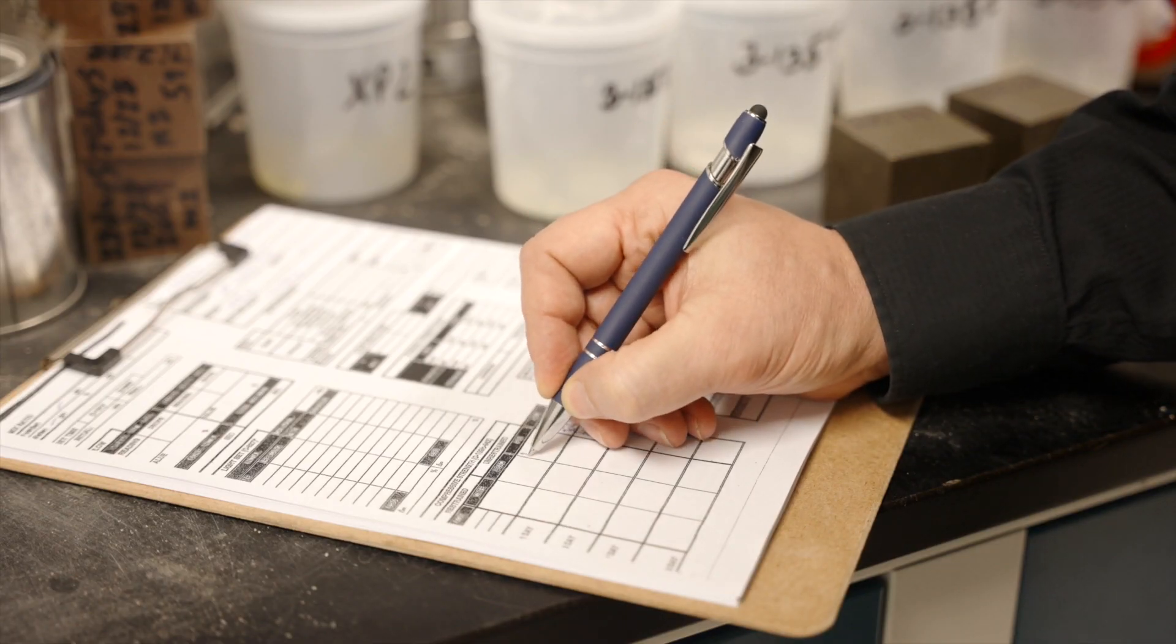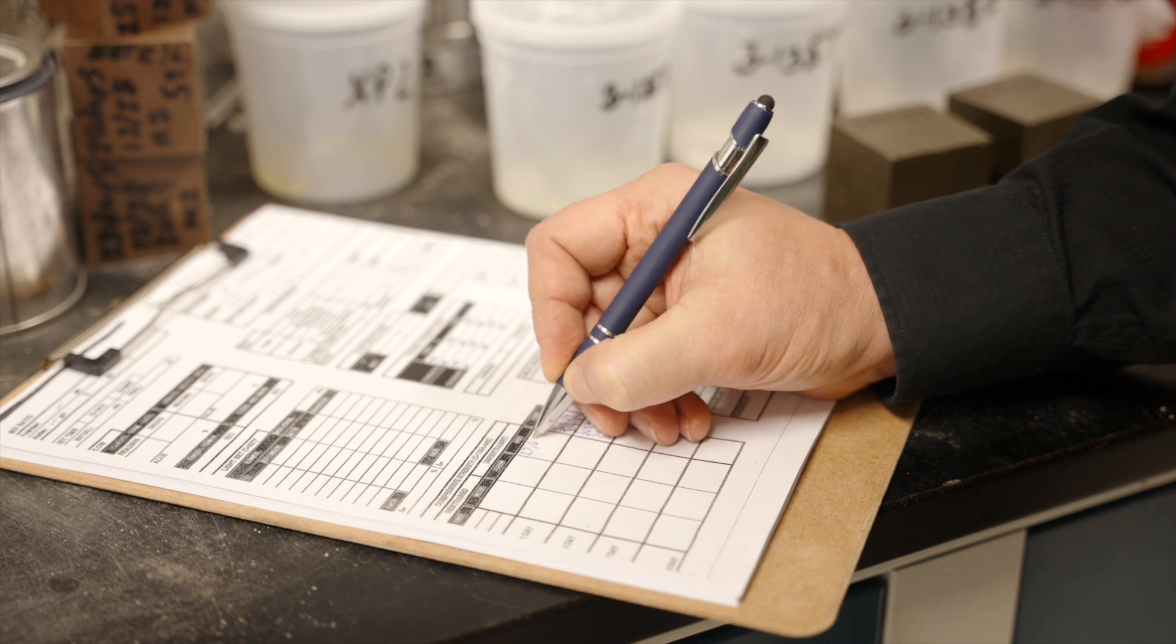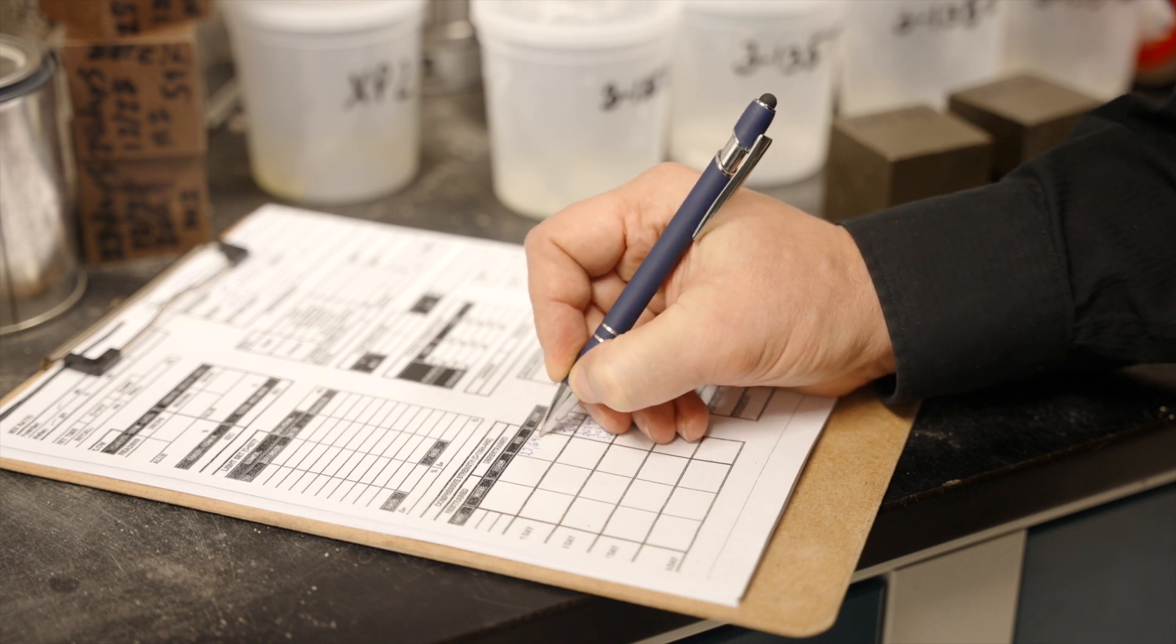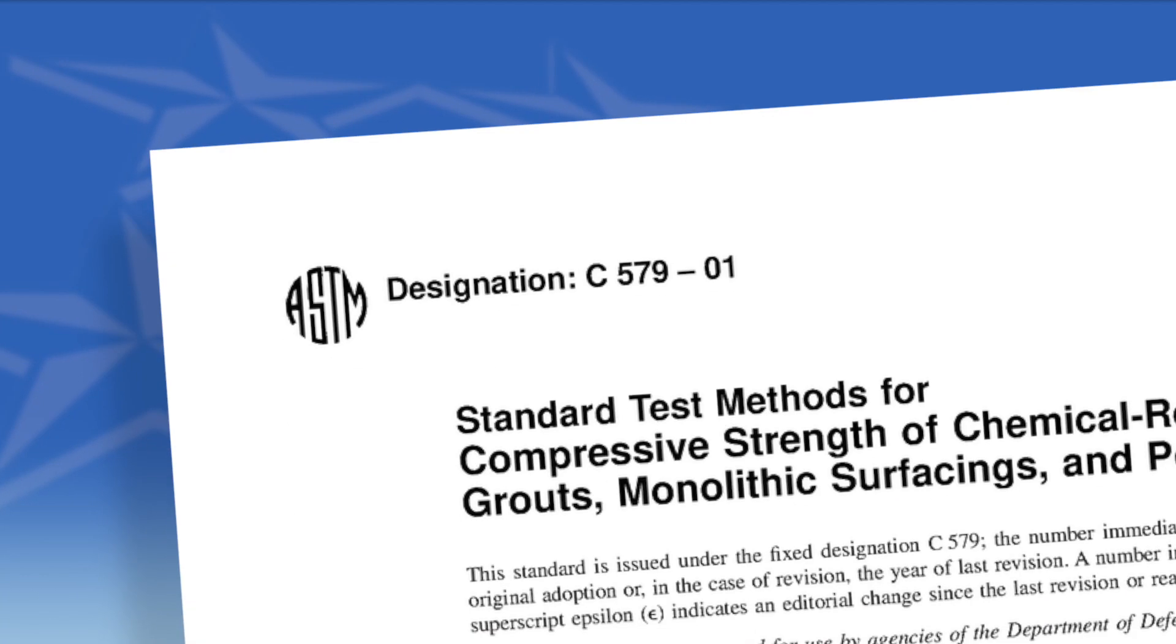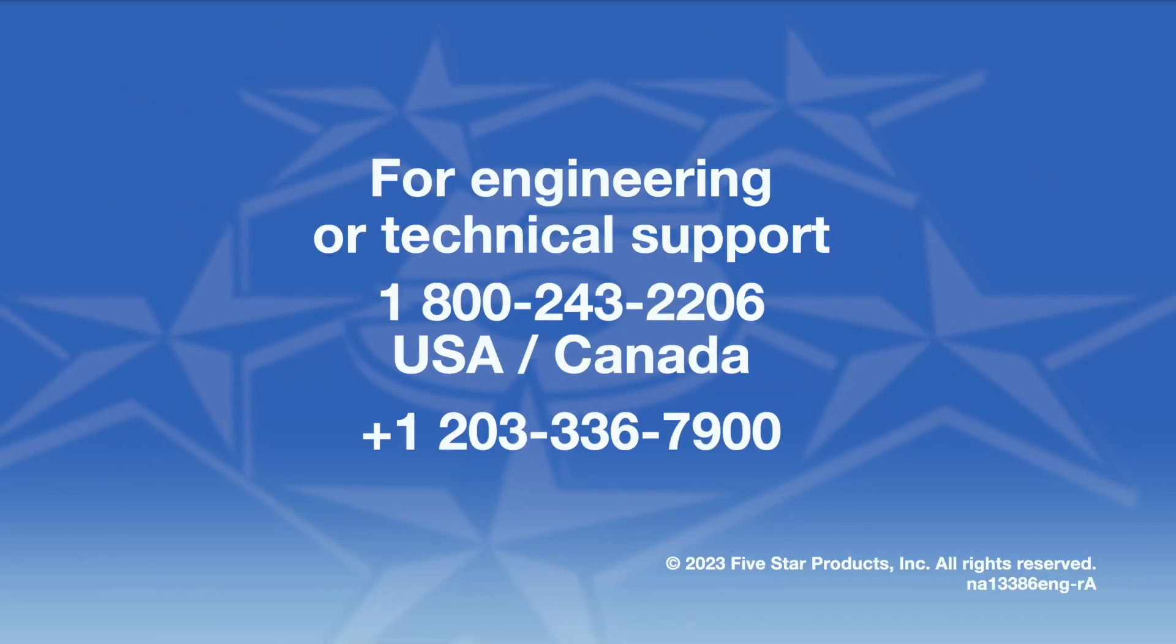Following the test, record the compressive strength results in pounds per square inch by dividing the load at failure by the cross-sectional area. For more information, refer to ASTM C579. Thank you for taking the time to learn the proper procedures for compressive strength testing of 5-star epoxy grouts. Engineering and technical support are available. Please get in touch with us at 1-800-243-2206 in the US or Canada or plus 1-203-336-7900.